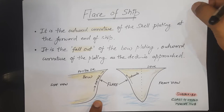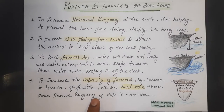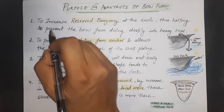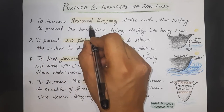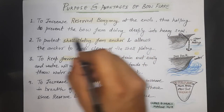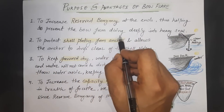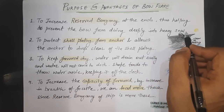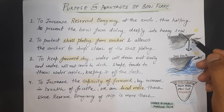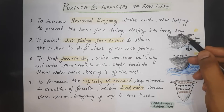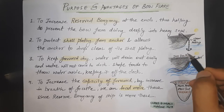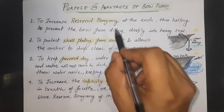What is the purpose and the advantages of the bow flare on a ship? The first point is to increase the reserve buoyancy at the ends, thereby helping to prevent the bow from diving deeply into the heavy seas. If the forward part flares outwards, it will automatically increase the reserve buoyancy, and thereby it will not let the ship deeply dive into heavy seas.